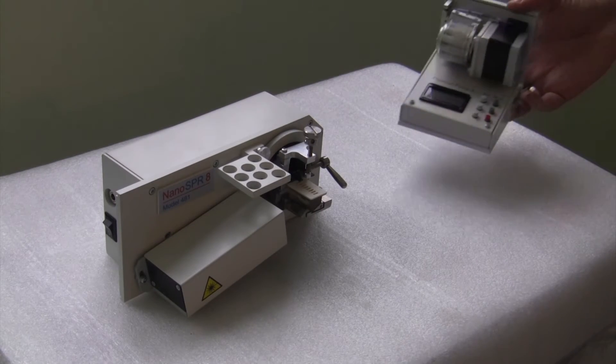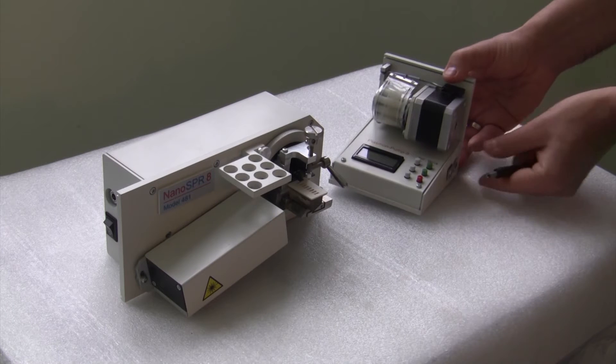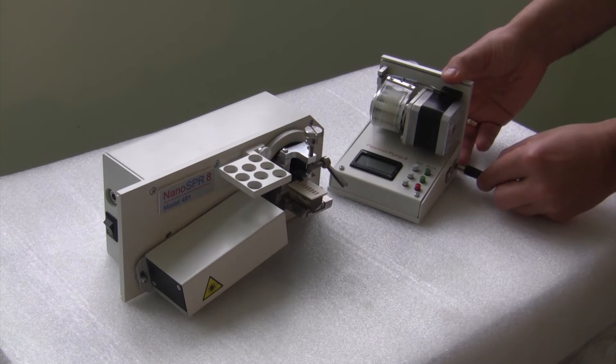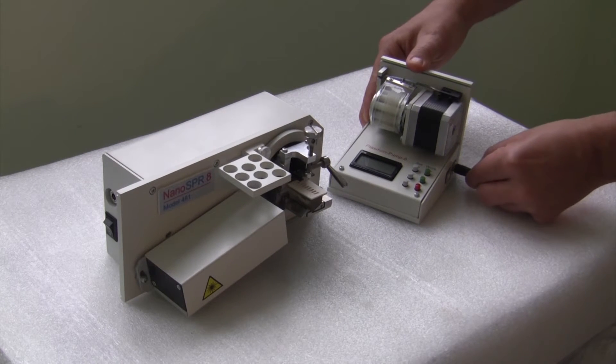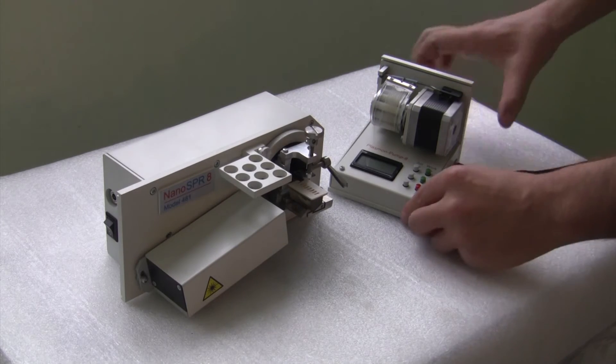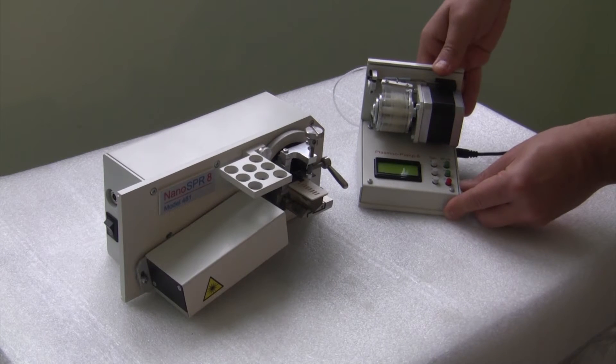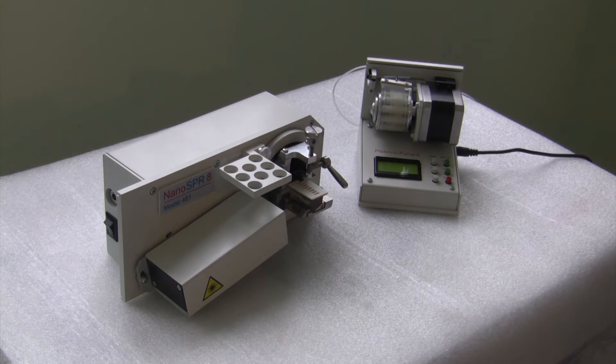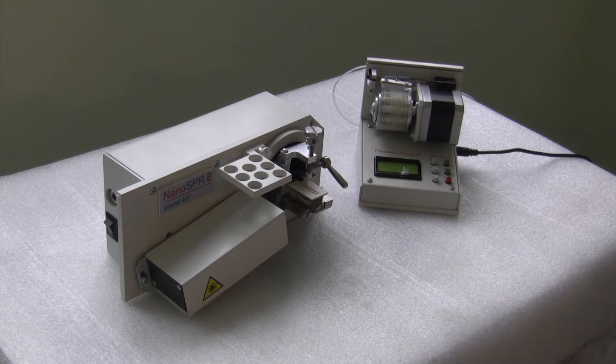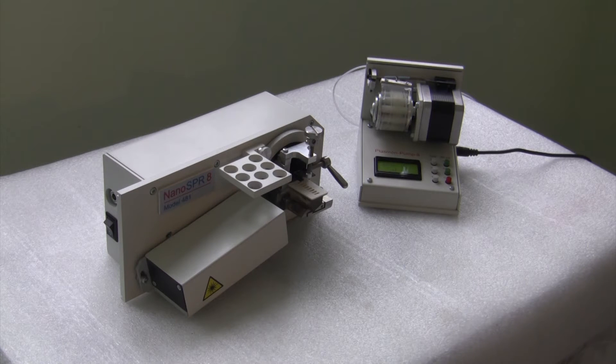Our SPR devices require a peristatic pump if you plan to run liquid flow mode experiments. We offer a peristatic pump that is integrated with the device software via USB connection. User can adjust flow rate, direction and start-stop the pump manually by using buttons at the front side.